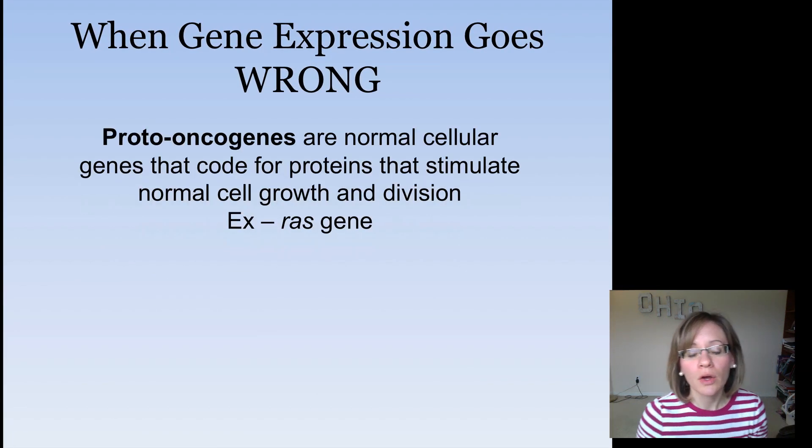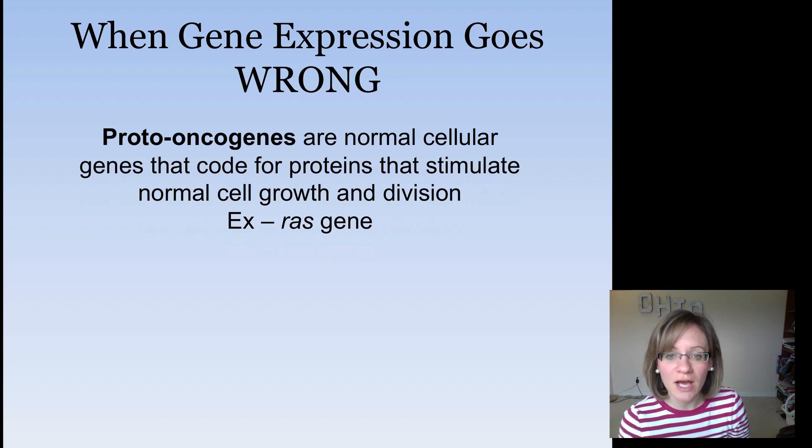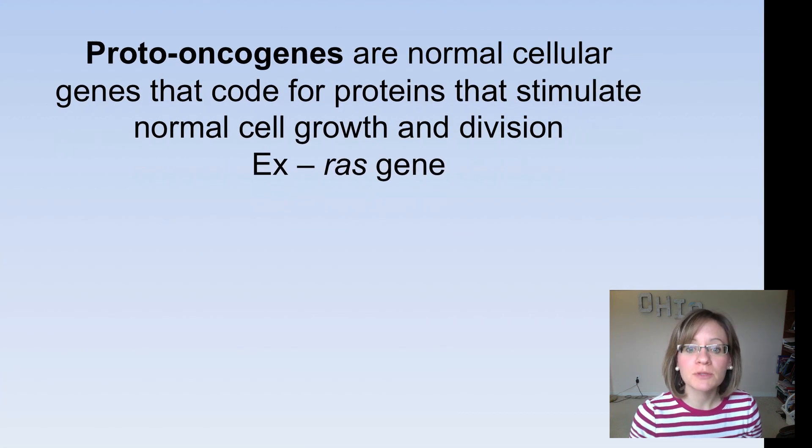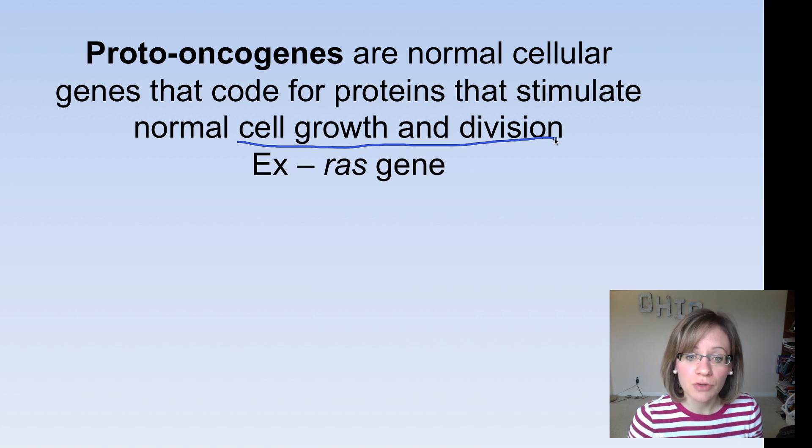But what happens when gene expression goes wrong? Earlier in the year we also talked about, see how I said this was a culmination video, we talked about cancer, right? We looked at Henrietta Lacks and her karyotype. So let's review some of these terms. Proto-oncogenes, remember, are normal cellular genes that code for proteins that stimulate normal cell growth. So they're normal, and they help your cell cycle to grow and to divide. An example of this is the RAS gene.